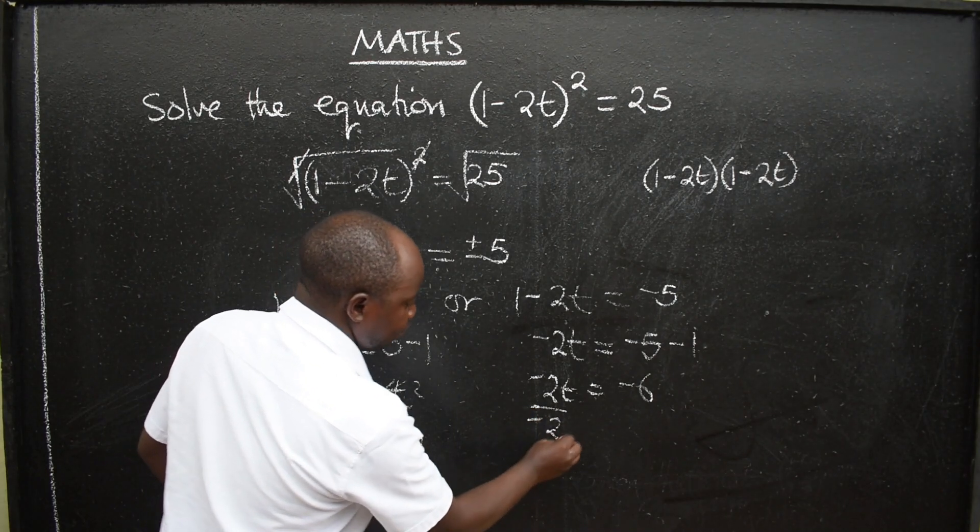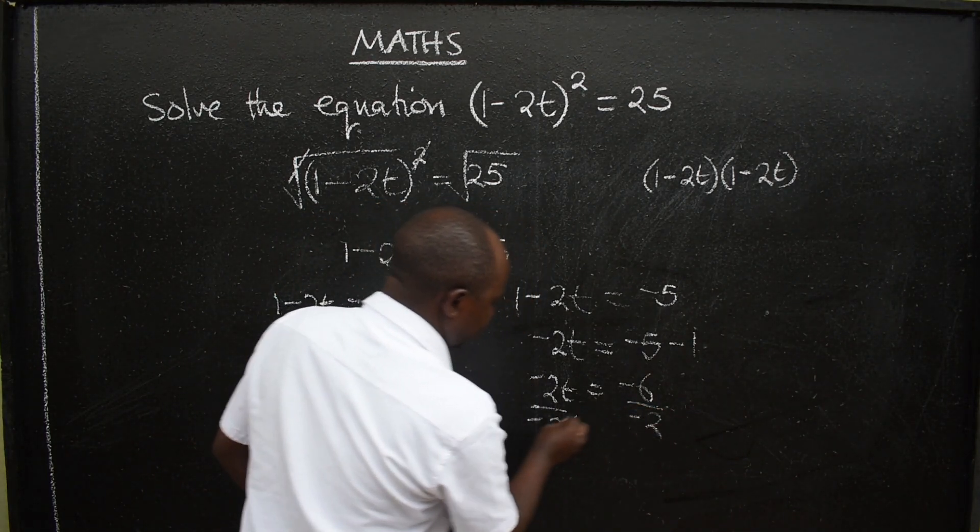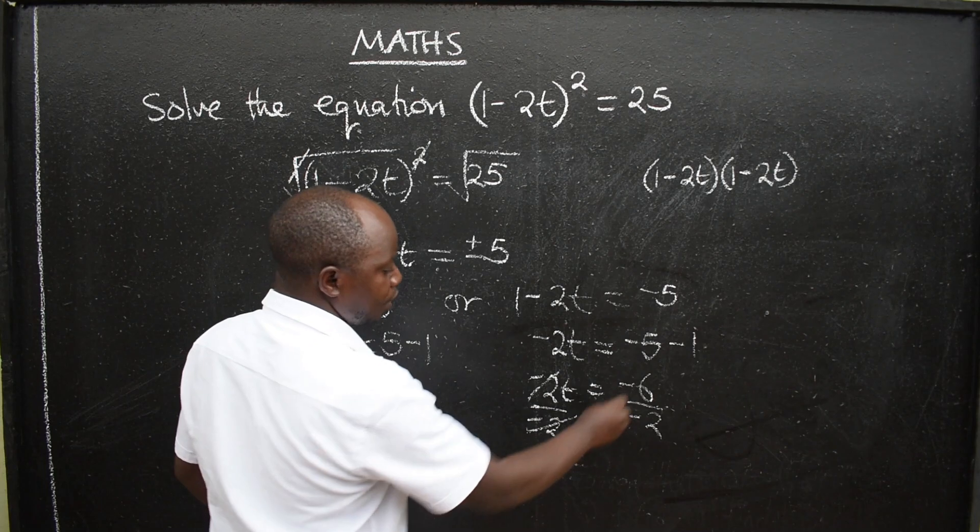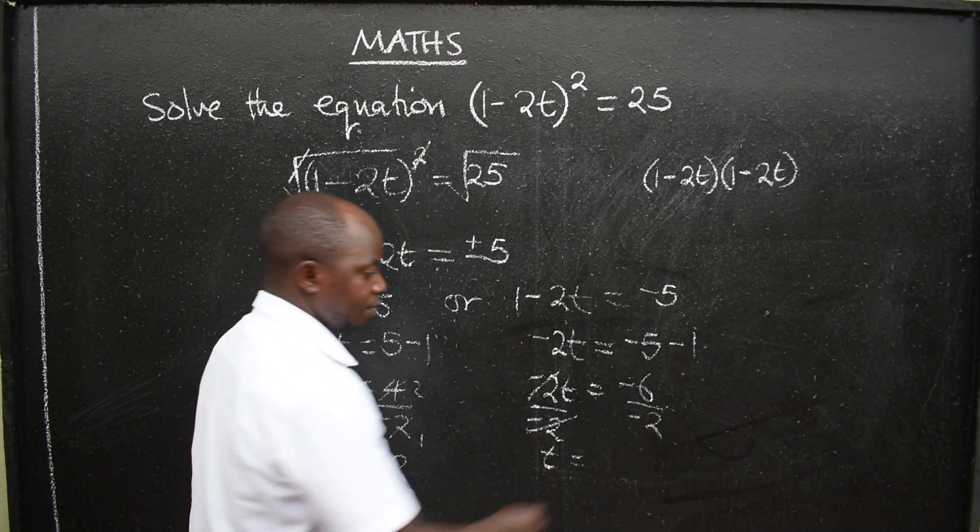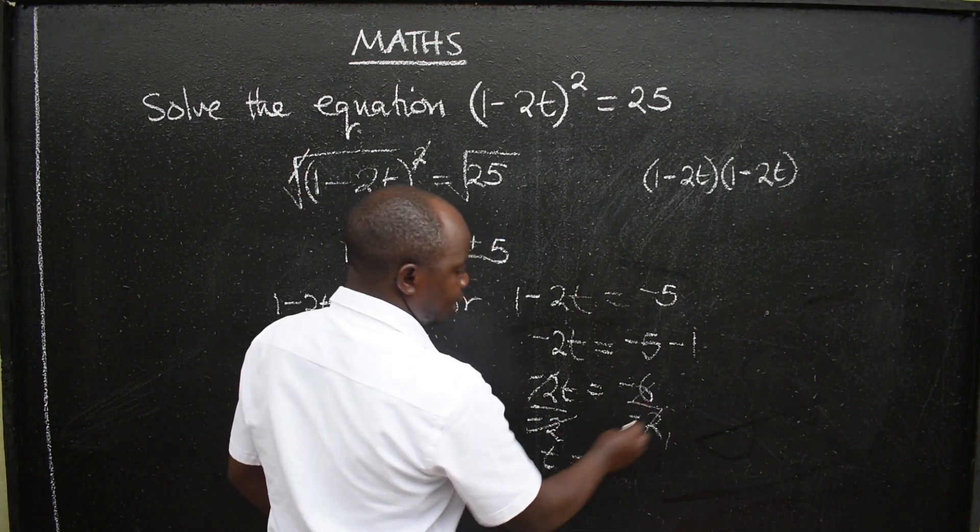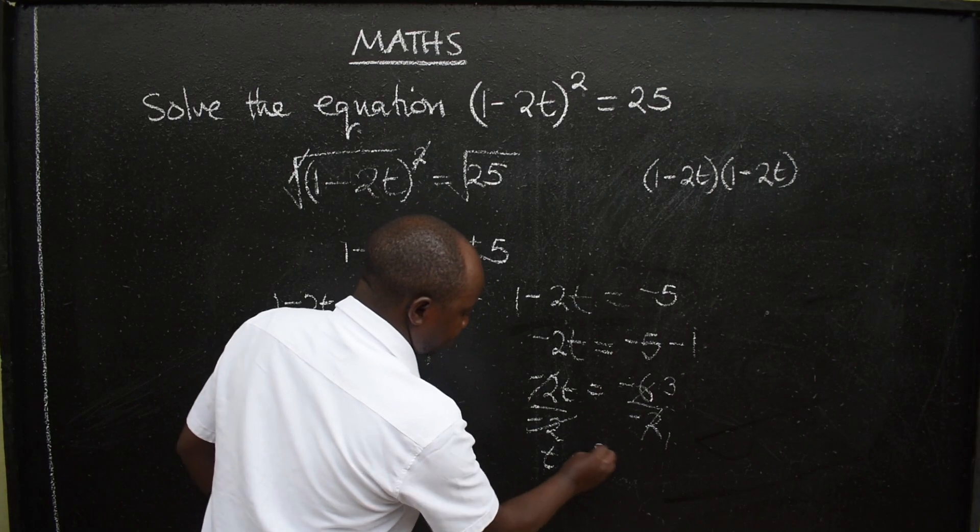Divide both sides by -2, -2. And so everything, t will be equal to, -2 -2 -2 will be positive. How many 2s? I need 6, 3 of them. So 3.